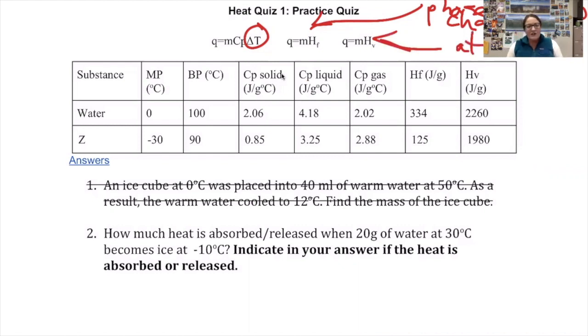For question number two: how much heat is absorbed or released when 20 grams of water at 30 degrees becomes ice at negative 10? To approach this problem, I need to consider what phase it's in here and what phase it's in here. 30 degrees water is between the melting point and boiling point, making it a liquid. At negative 10 degrees, that's below water's freezing point, so it's going to be a solid. Once I know I have a phase change going on, that they're starting and finishing in different phases, I know it's a multi-step problem.